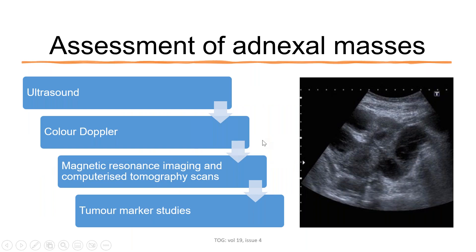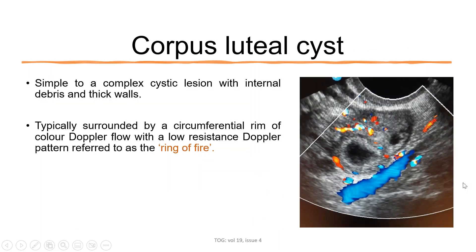When assessing adnexal masses, we mostly perform ultrasound with color Doppler. If there is any confusion or suspicion of adnexal carcinoma, we can do MRI or CT scan, along with tumor marker studies. On ultrasound, corpus luteal cysts appear as simple to complex cysts with internal debris and a thick cyst wall, typically surrounded by a circumferential rim of color Doppler flow — we call this the 'ring of fire.'